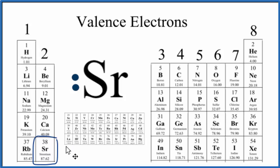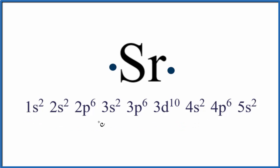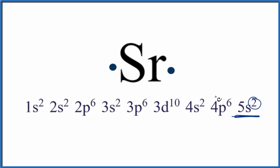The other way we can do this is write the electron configuration for strontium. Here's the electron configuration with all 38 electrons for strontium. But the only two that really matter to us as chemists here, the ones involved in bonding, are the valence electrons. They're in the highest energy level, the fifth energy level, and we have two. So two valence electrons — we put two dots around the element symbol for strontium. That's our Lewis structure, same as before.